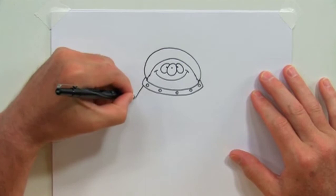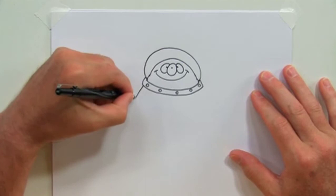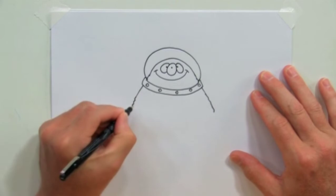And here's his body. He's kind of a short, stout little guy. Comes around like this.